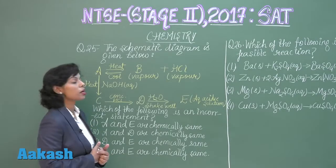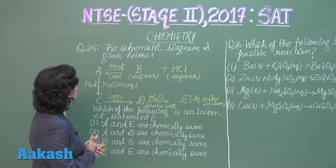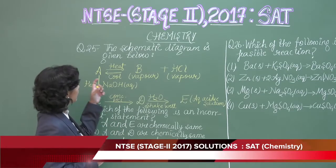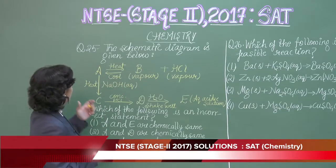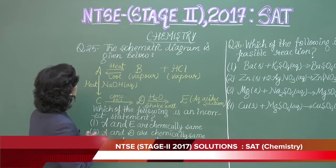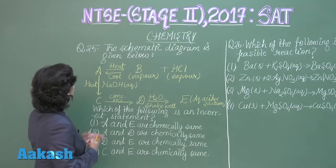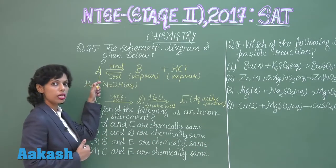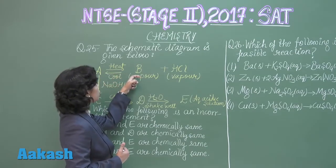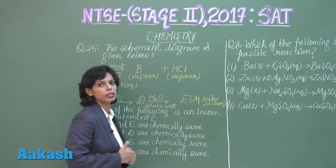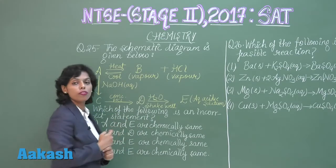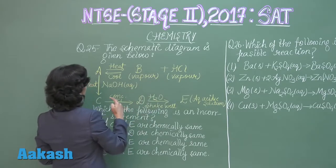Now students, we are here with question number 25. According to this question, you just have to look at the schematic diagram given below and find the incorrect statement. In the schematic diagram, substance A is heated and ultimately changed into B and HCl vapors — so both B and HCl vapors are produced.